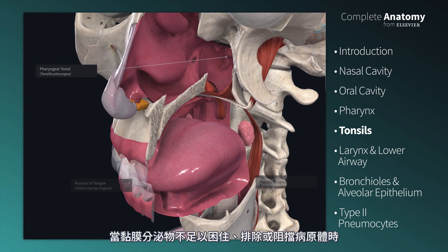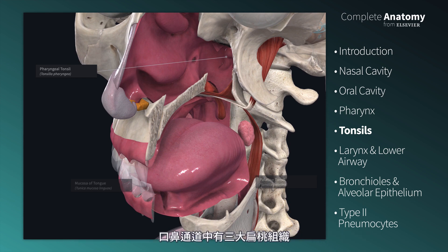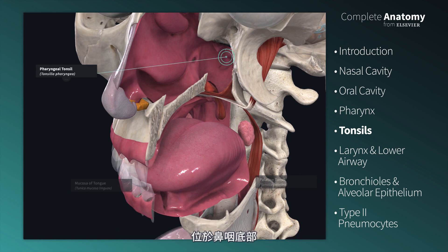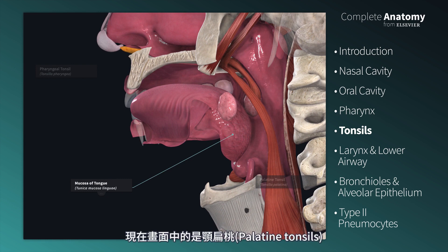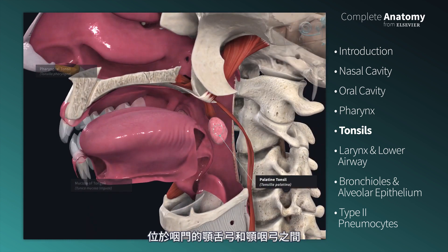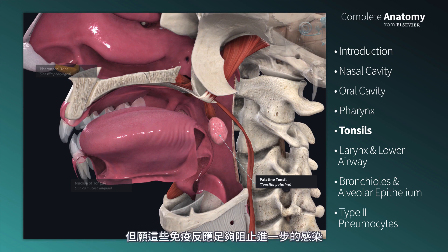In the event that the mucosal secretions are insufficient to trap, repel, or block pathogens, beds of immune cells are ready and waiting in structures called tonsils. There are three principal tonsils in the nasal and oral passageways. The pharyngeal tonsil, shown here, is located at the roof of the nasopharynx. The lingual tonsils, shown here, are located on the posterior lateral surfaces of the tongue. The palatine tonsils, shown here, are located between the palatoglossal and palatopharyngeal arches of the fauces. Each tonsil contains cells for an adaptive immune response — macrophages, B lymphocytes, and T lymphocytes. Hopefully, these immune responses are enough to fight off further infection.